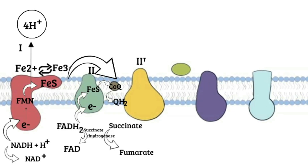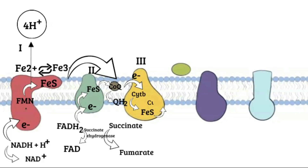Complex III receives electrons from CoQ. Complex III contains cytochrome b, cytochrome c1, and between them an FES prosthetic group. Electrons from CoQ pass to cytochrome b, then to FES, and finally to cytochrome c1, as per the redox potential. Here again, the energy generated is used to pump four protons into the intermembrane space.